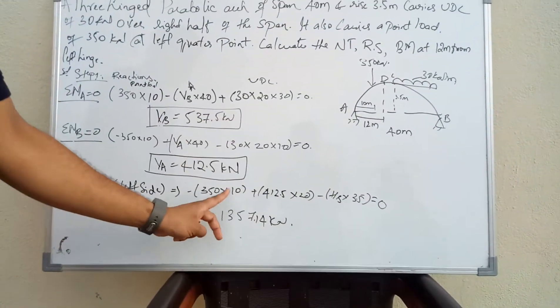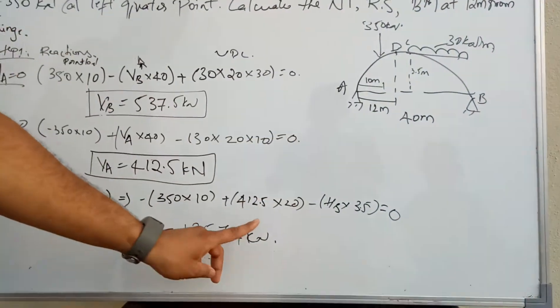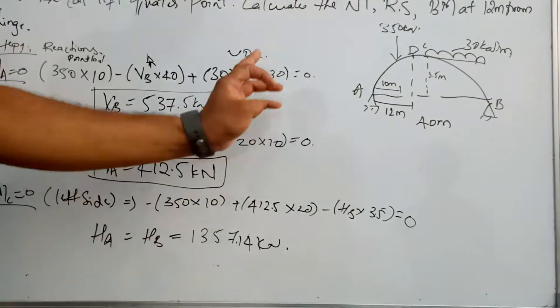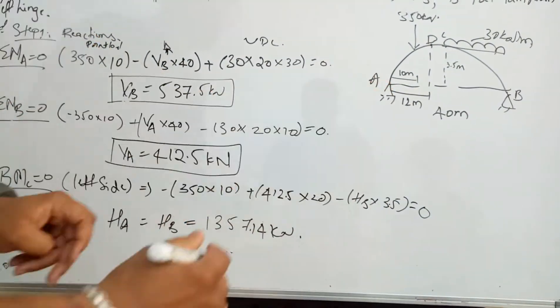Considering the left half of the support: 350 into 10 plus VA into 20, which is 412.5 into 20, and HB into 3.5.